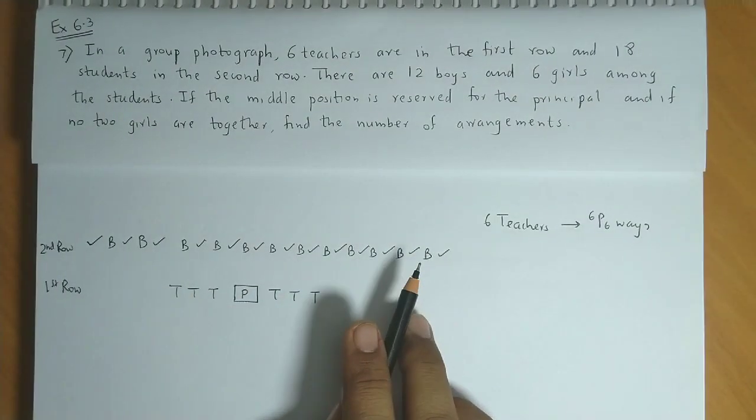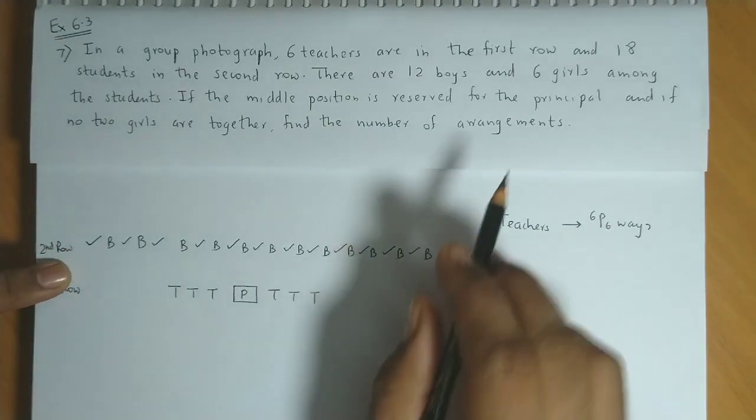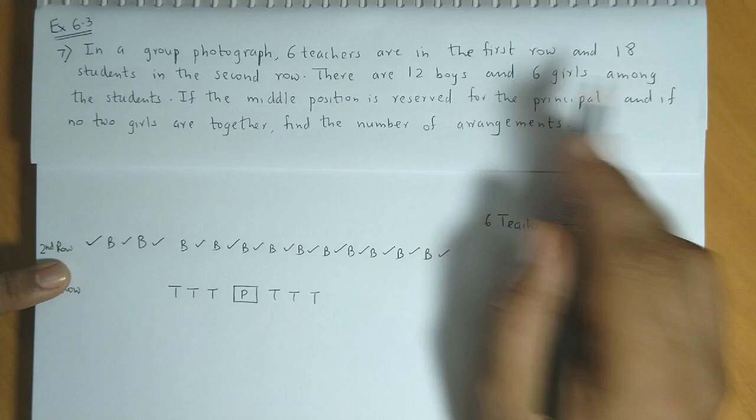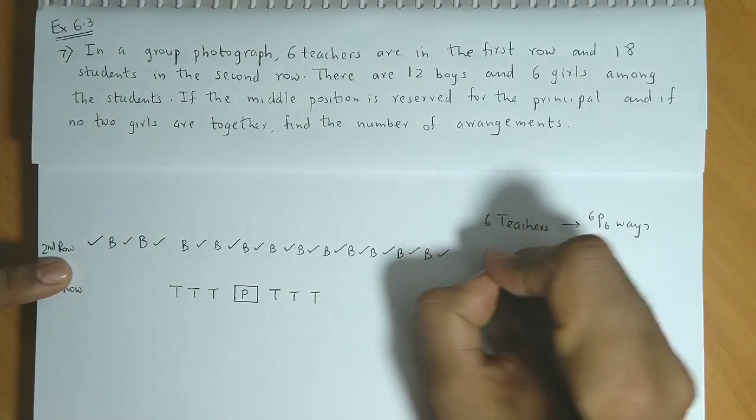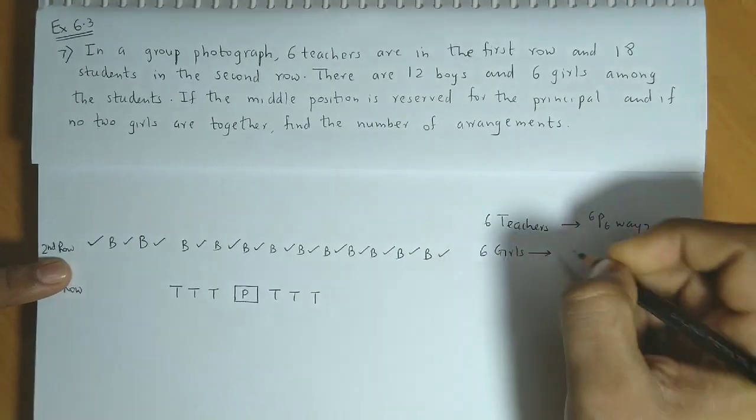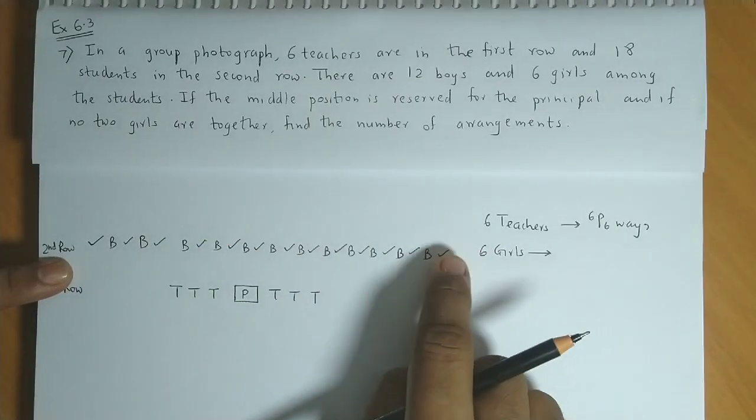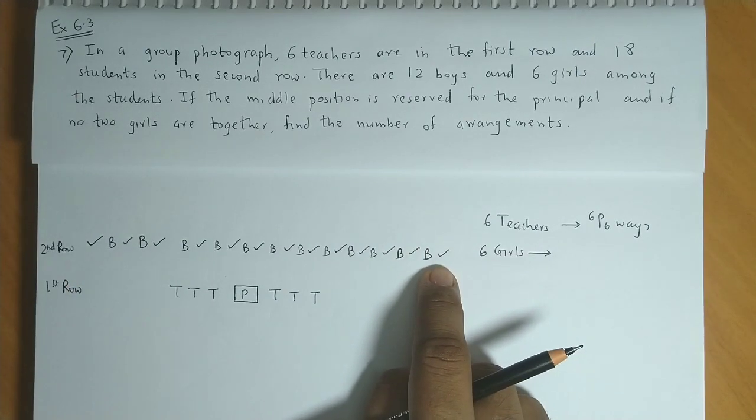So these are 6 possibilities. The 6 girls could be arranged around these 12 boys. If we count around, we have 13 places available.